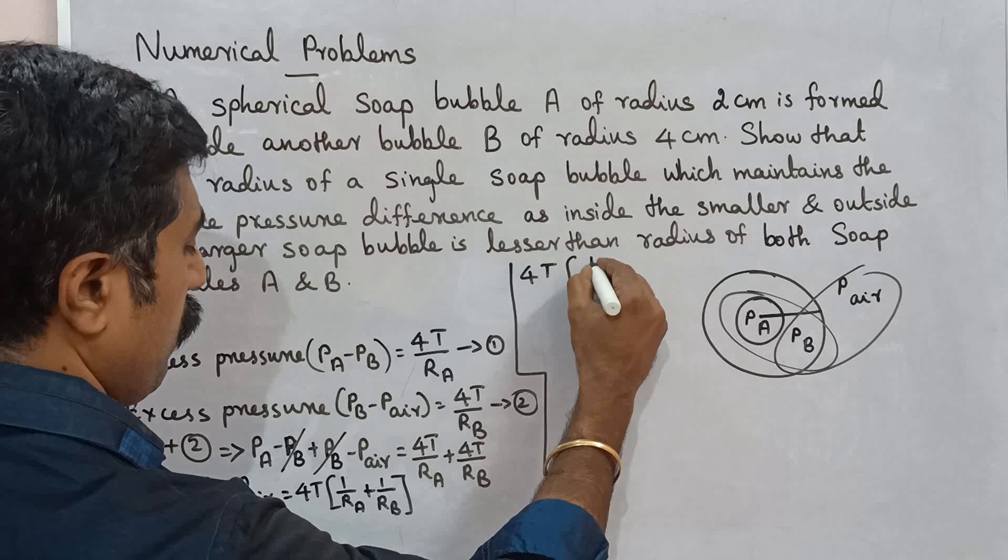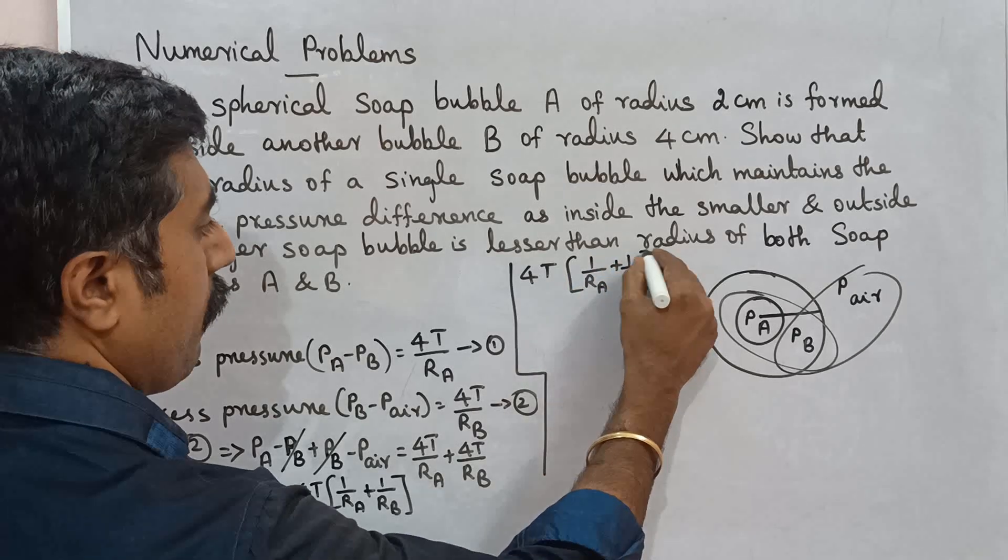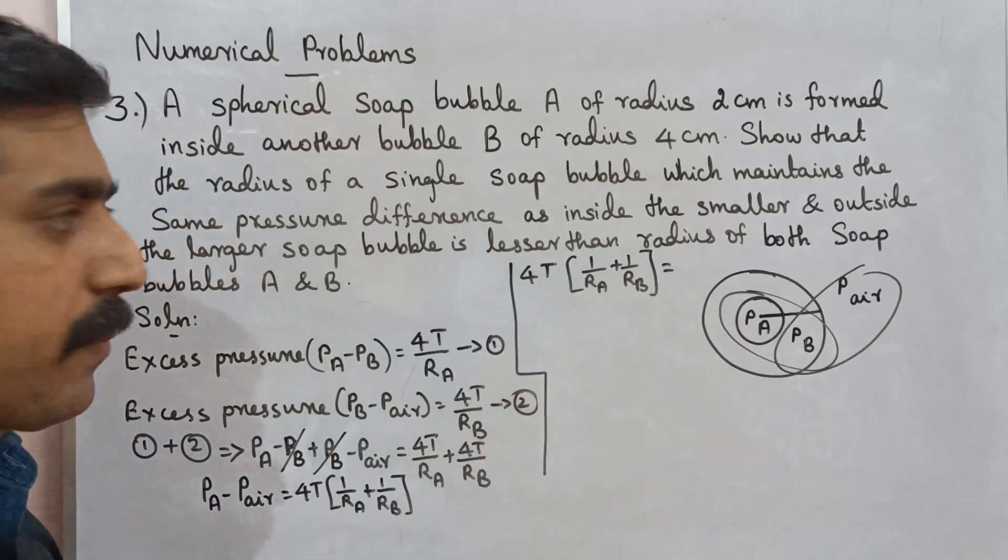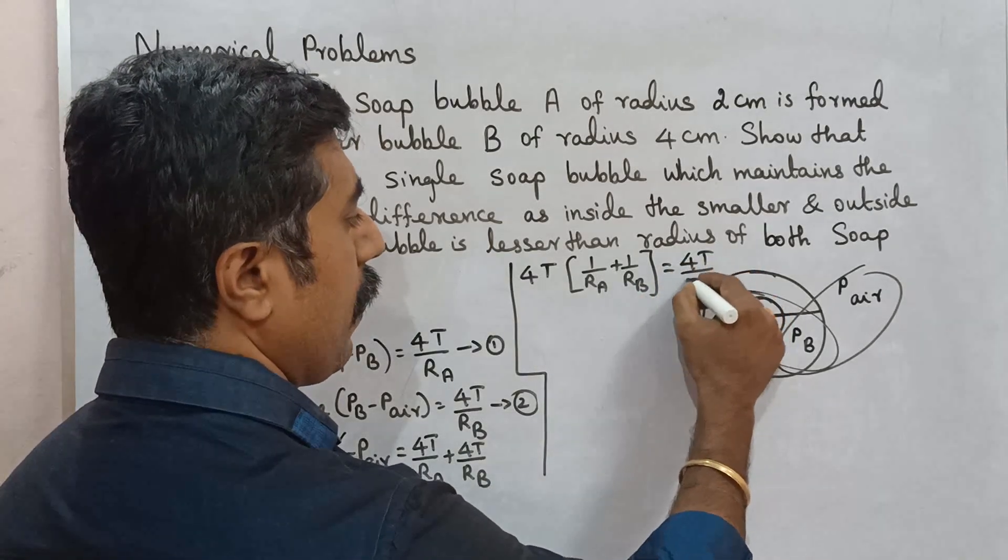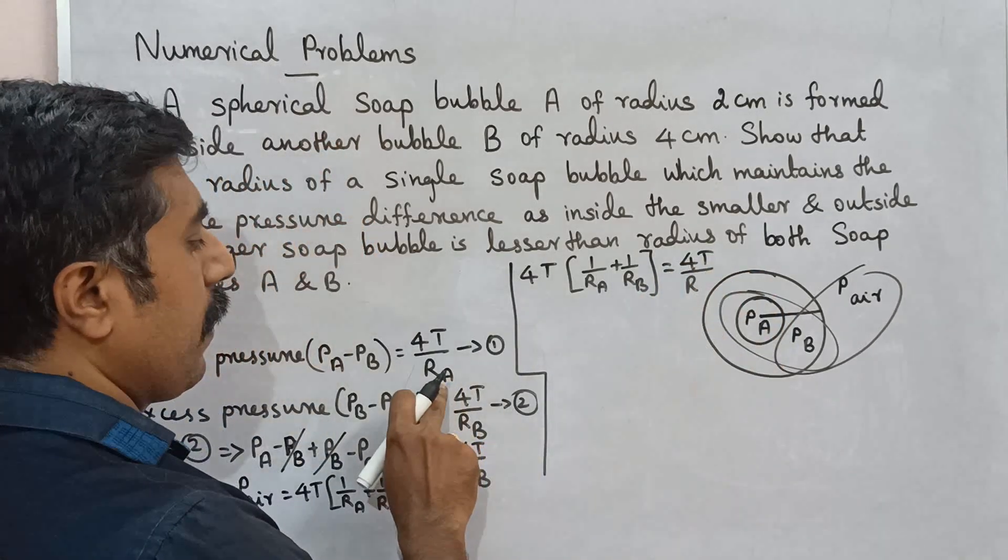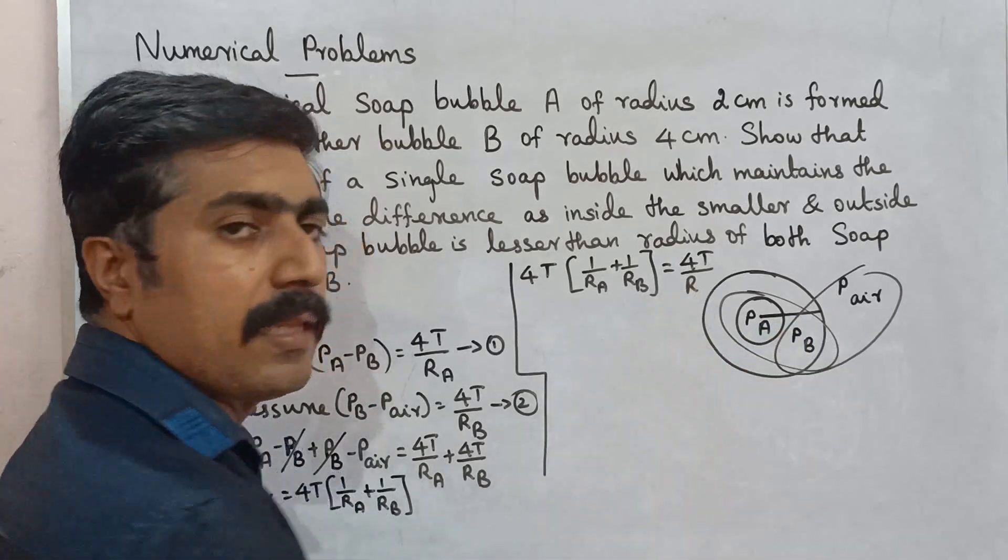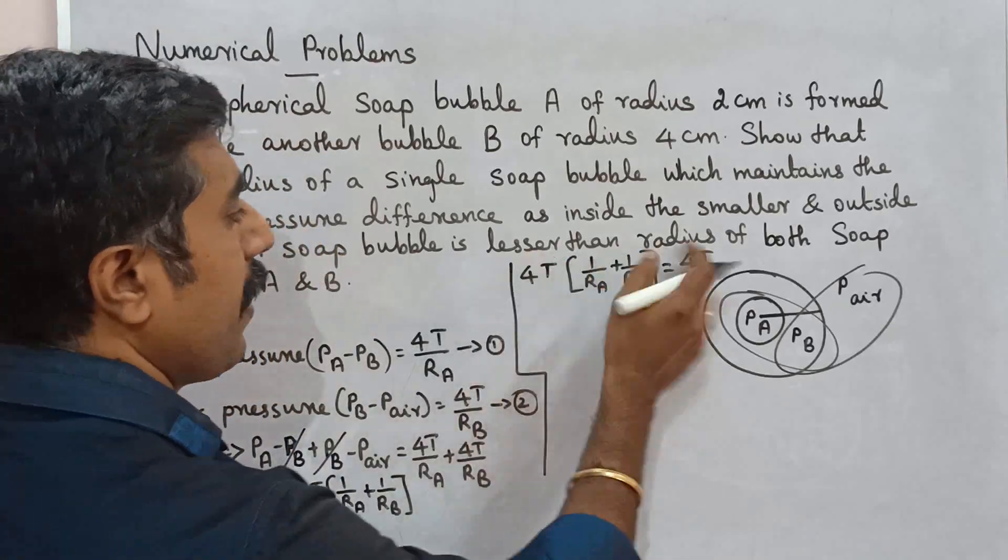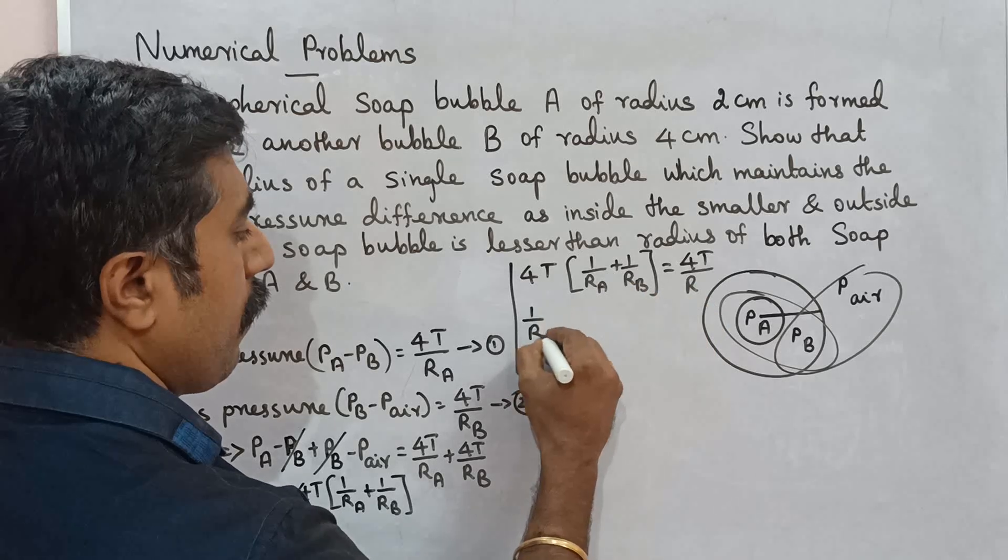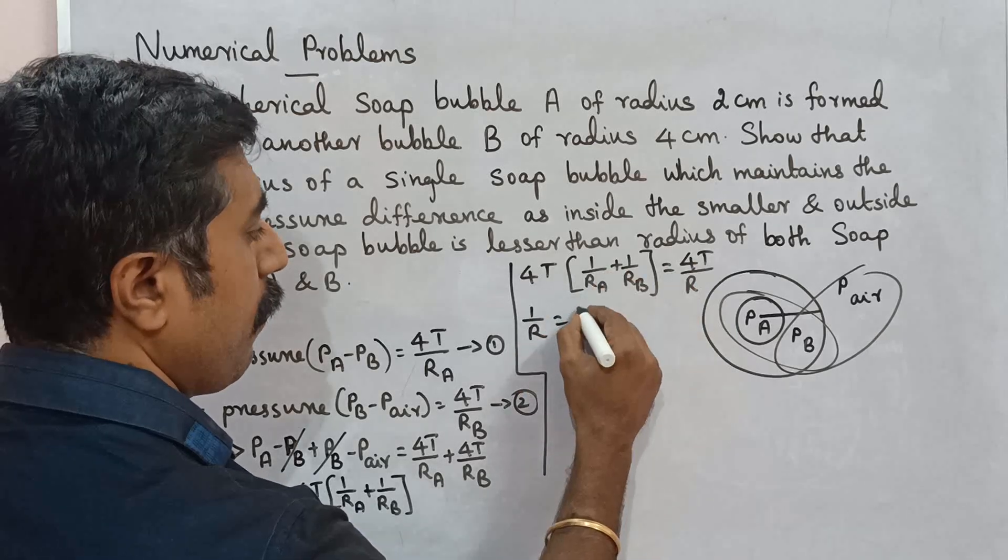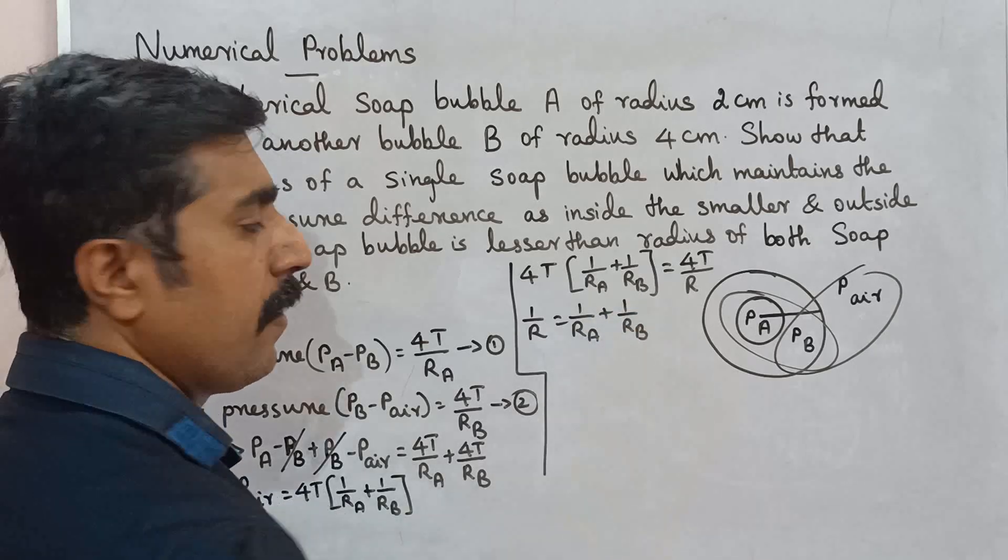Which is equal to 4T into 1 by Ra plus 1 by Rb. So this is excess pressure: 4T by R. A is smaller bubble, B is bigger bubble, R is single bubble. So 1 by R equals 1 by Ra plus 1 by Rb.